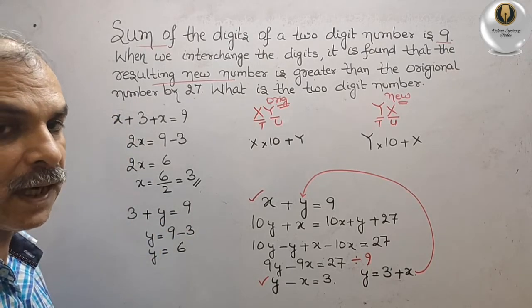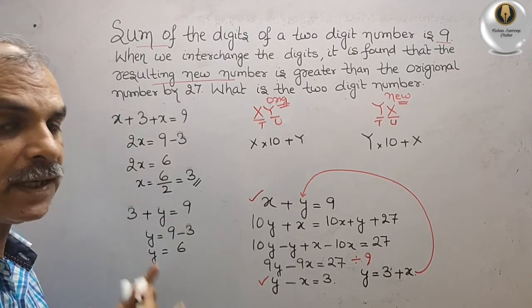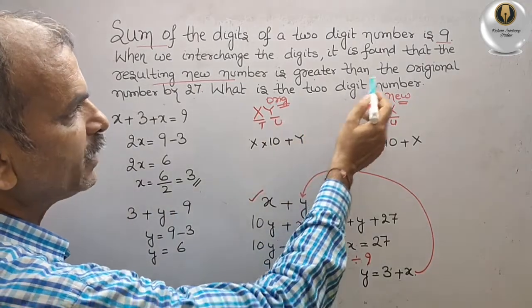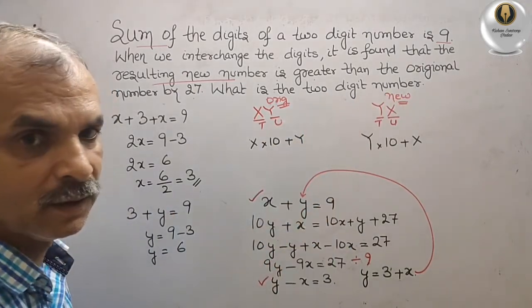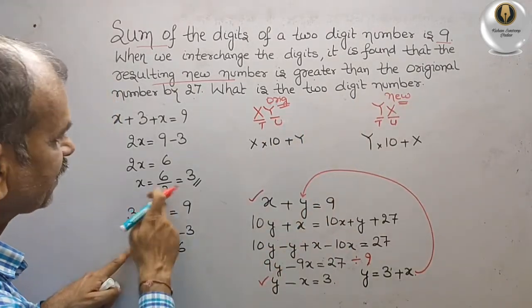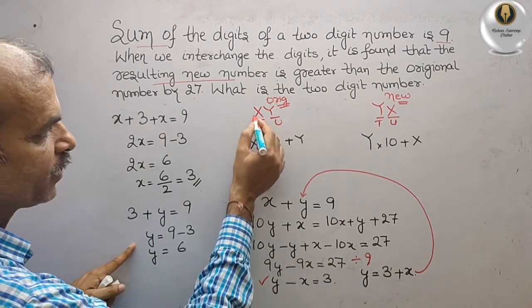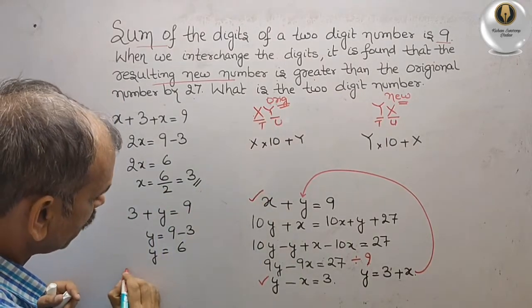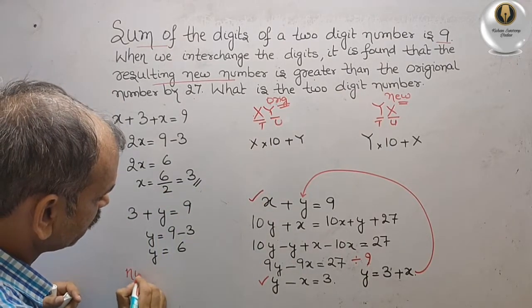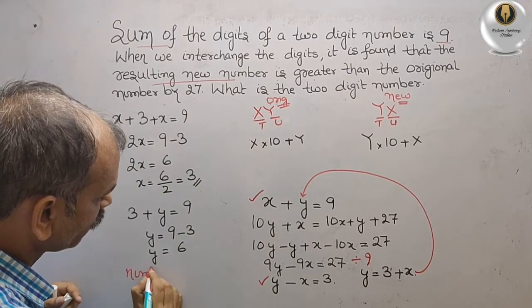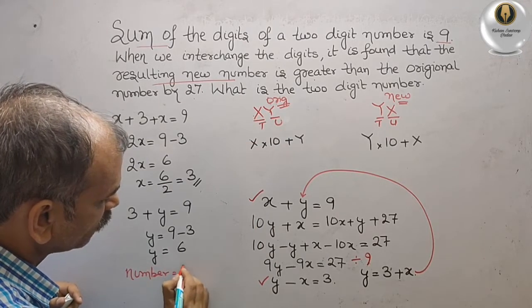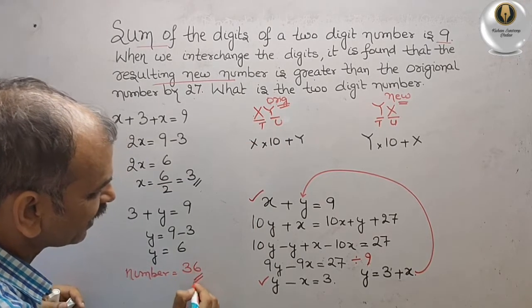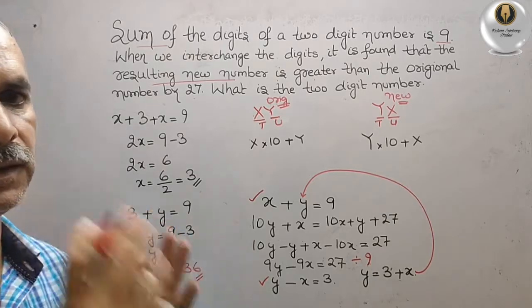So the two-digit number is: x is 3 and y is 6, therefore the number is 36.